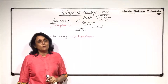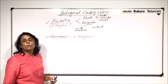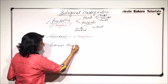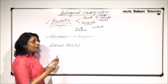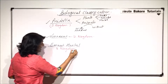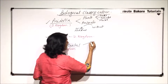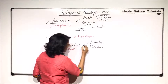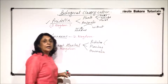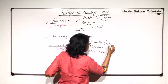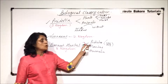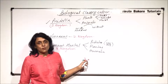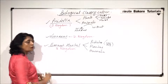These were the initial classifications and were used for a very long period of time. Then came the three kingdom classification, given by Ernest Haeckel. He added one more kingdom — the newly added Protista — along with Plantae and Animalia. In Protista, he placed unicellular organisms. But again, there was no specific place for fungi-type organisms.